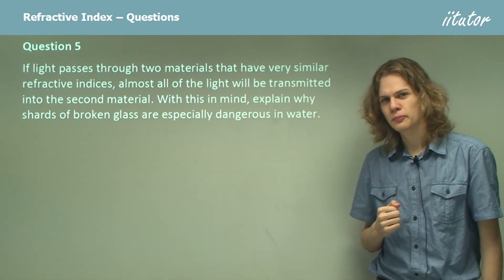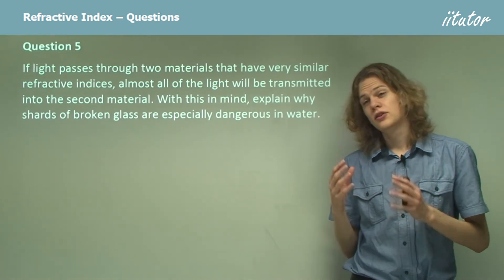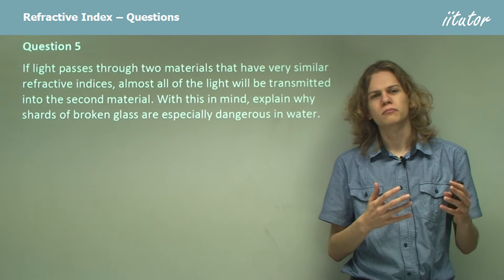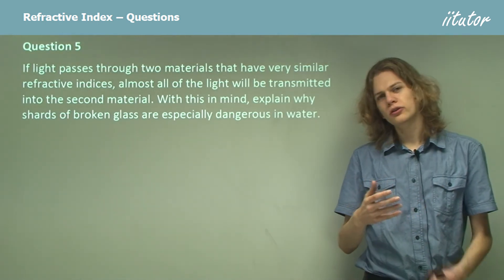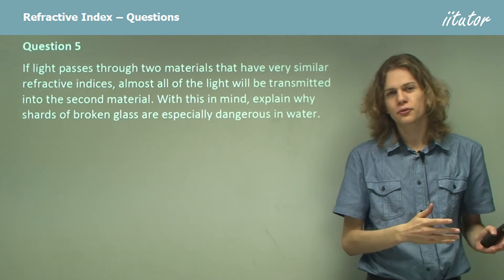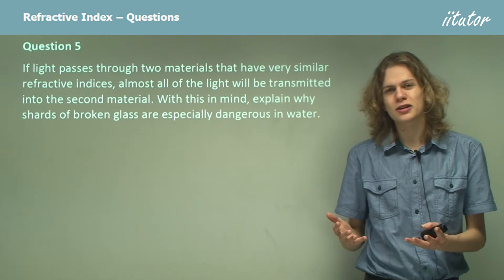Now, let's think about this for a moment. Glass has a refractive index of about 1.5. This is very different from the refractive index of air, which is about 1.0. So if we have a shard of glass in air, we don't get all of the light being transmitted through the glass. We get some of the light being reflected. That's why, of course, it's possible to see glass quite easily.